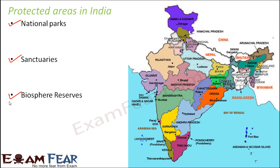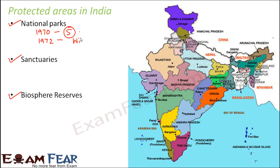Now you will be surprised to know that in India somewhere around 1970 there were only five national parks which existed. But then later in 1972 came up the Wildlife Protection Act, where more emphasis was given on protection of animals and plants. So after this Wildlife Protection Act many more national parks were created, and in 2012 it was found that there were 112 national parks in India.